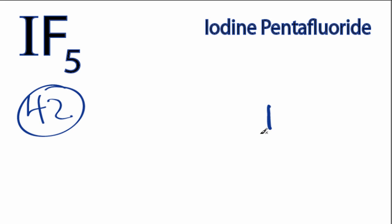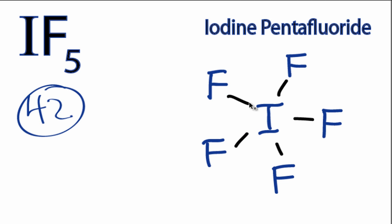Iodine is the least electronegative. We'll put that at the center, and then we'll put fluorines around the outside. Next, we'll draw a single bond between the iodine and each of the fluorines to form chemical bonds.